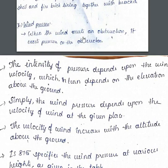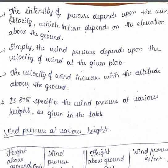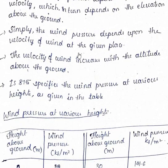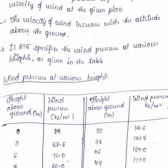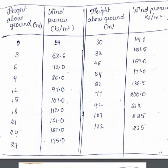Wind pressure acts when wind meets an obstruction — it exerts pressure on it. The intensity of wind pressure depends upon the wind velocity, which in turn depends on the elevation above the ground. Simply put, wind pressure depends on the velocity of wind at the given place, and both velocity and pressure may change according to location and height. The velocity of wind increases with altitude above the ground.